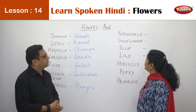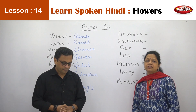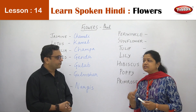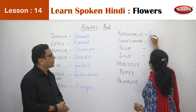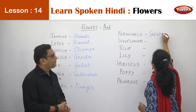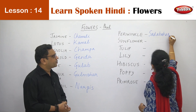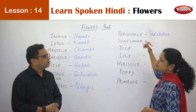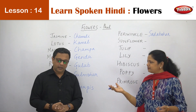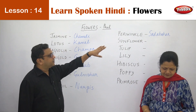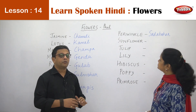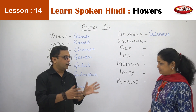The next flower is the Periwinkle. Now Periwinkle is a flower which is always blooming, so that is why its name is Sada Bahar. Sada means always, and Bahar means always blooming. This flower is generally used in the household for the household God.